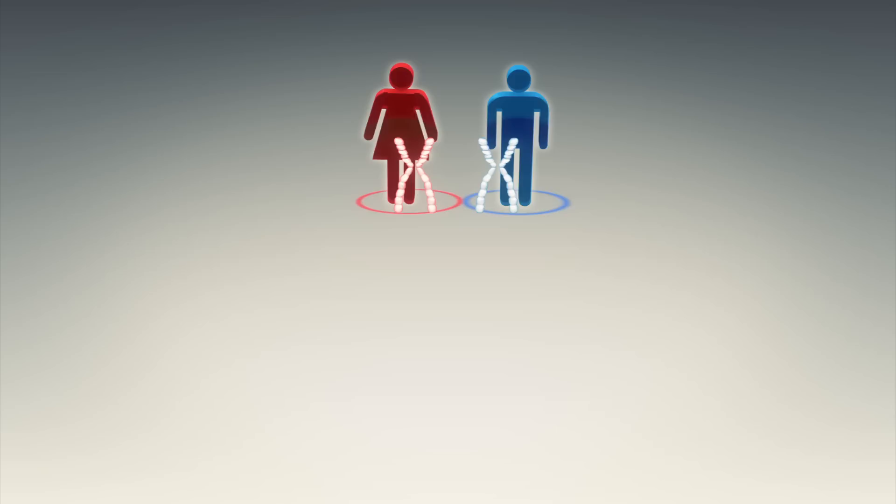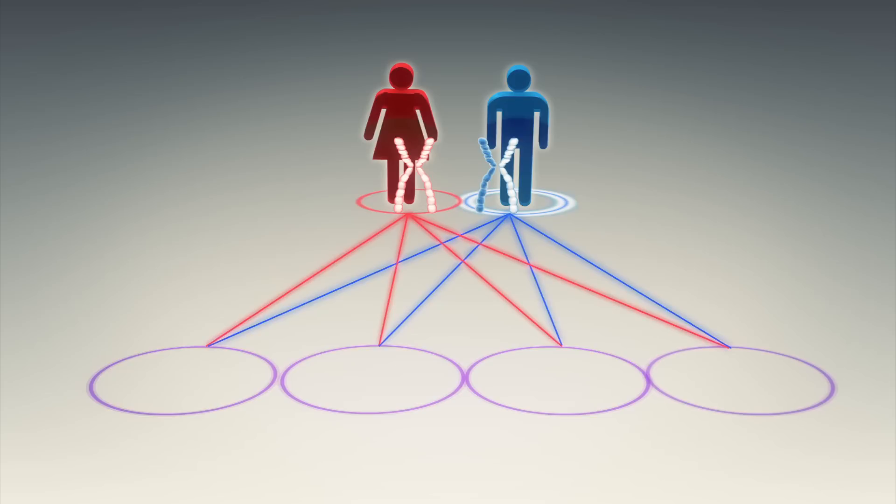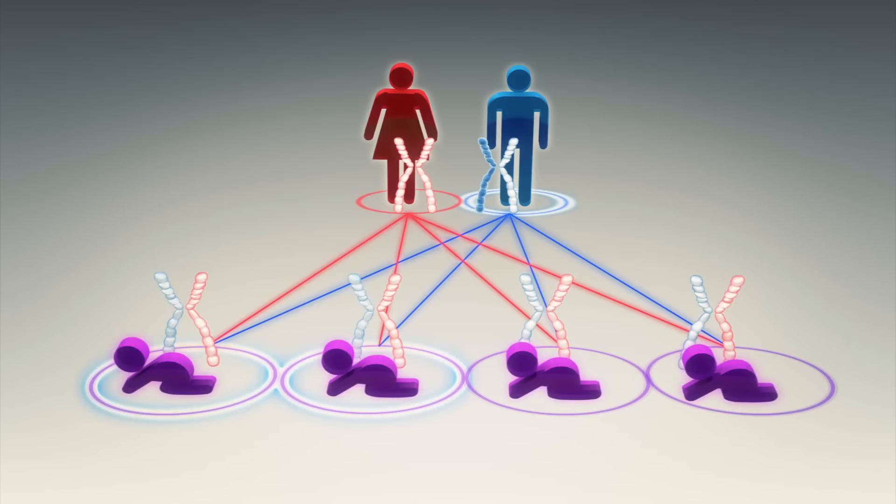The mutations may be inherited from either parent. There's a 50% chance that parents will pass their BRCA mutation to a child because each parent contributes a chromosome to the child during reproduction.